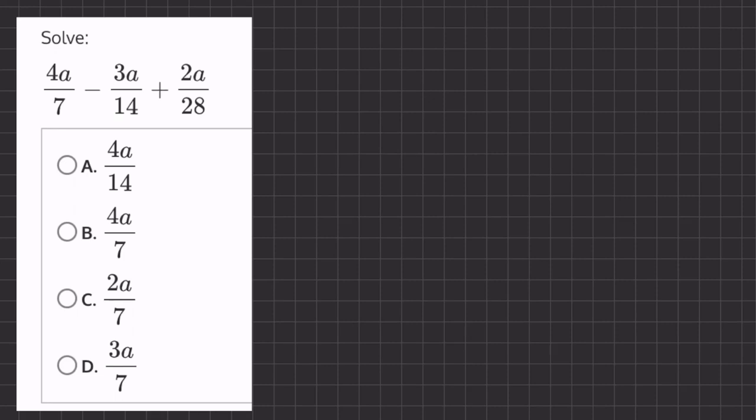All right, so in this question we are subtracting and adding fractions. Now in order to subtract and add, we have to find our least common denominator, and in this case it's going to be 28 because 14 and 7 are all multiples of 28.